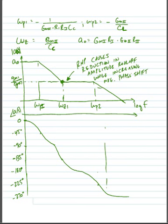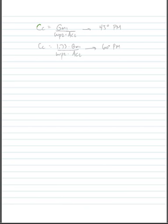So we're going to stop at this point for the next lecture. All we really need to know from this lecture is how to size our compensation capacitor. And we learned how to size our compensation capacitor and that it is just proportional to our CC is equal to GM1 divided by omega P2 times our closed loop gain for a 45 degree phase margin. And CC is equal to 1.73 times GM1 divided by omega P2 times ACL for a 60 degree phase margin.